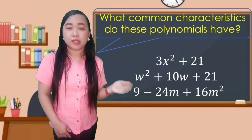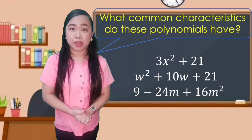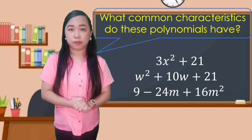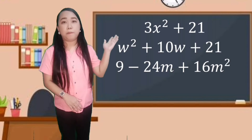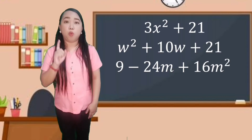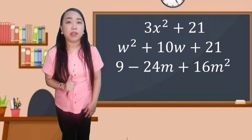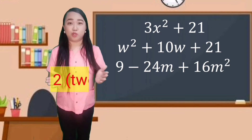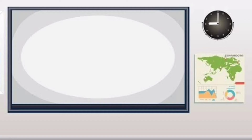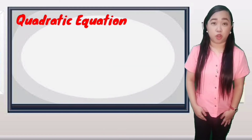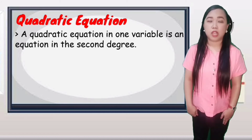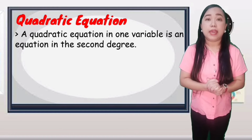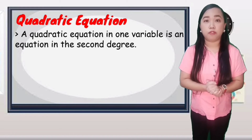Based on these results, what common characteristics do these polynomials have? These polynomials have one variable, and the highest exponent of the variable is 2. So let us define quadratic equation. A quadratic equation is an equation in second degree. When we say degree of an equation, it is the highest exponent of the variable.